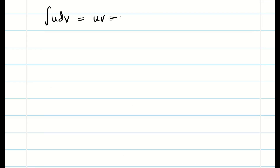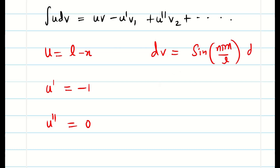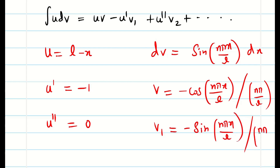Bernoulli's formula is: integral u dv = uv minus u' v₁ plus u'' v₂ etc. I am choosing u as (l minus x), which is my diminishing function. u' is minus 1, u'' is 0. dv = sine(nπx/l) dx. Then integrating this, we get minus cos(nπx/l) divided by (nπ/l) for v. v₁ is the next integral, which gives sine(nπx/l) divided by (nπ/l)². Mapping uv, u'v₁, all remaining terms get 0. Now we have to apply the limits.